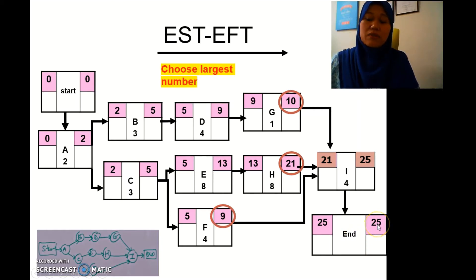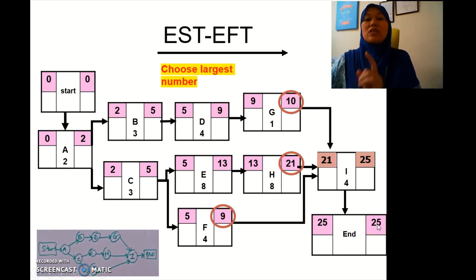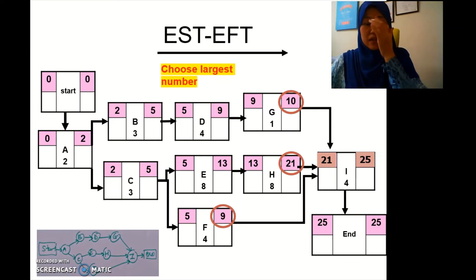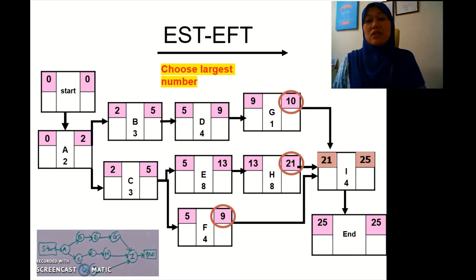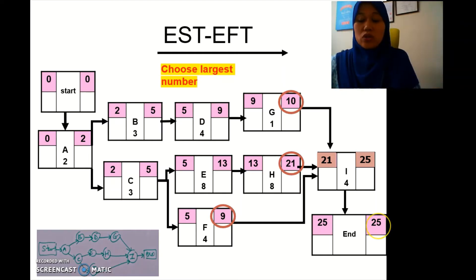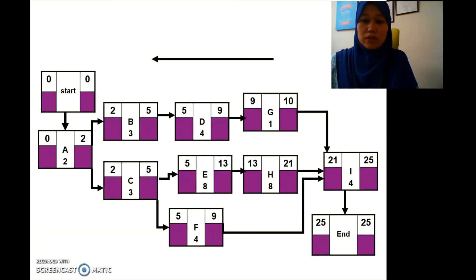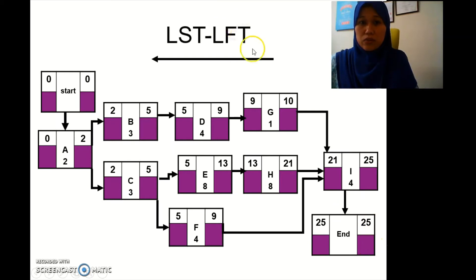Twenty-five plus zero at the end box gives us 25. Next we're going to do the latest start time and latest finish time, going backward — the other way.